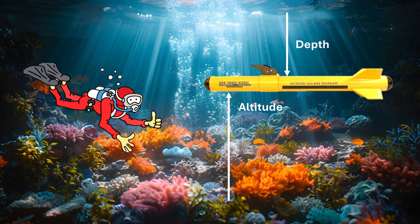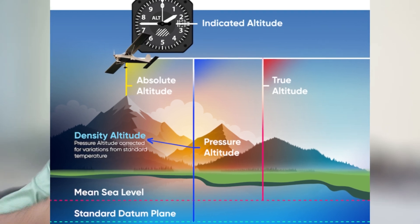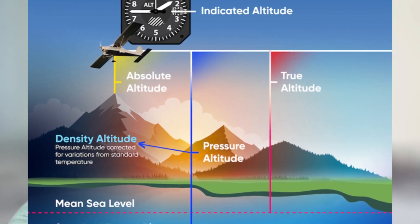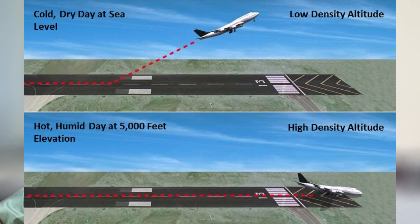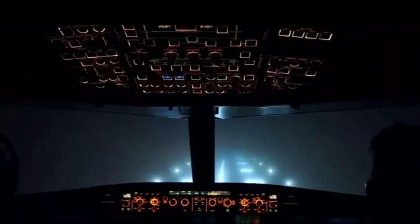Density altitude is the MSL altitude corrected for temperature and atmospheric pressure. The warmer or hotter the temperature, the higher the density altitude. On a hot summer day, a sea-level airport right near the ocean can have the same density altitude as another airport whose MSL altitude is a thousand feet higher. A pilot landing in thick fog or at night will find it extremely difficult to land without ILS support.